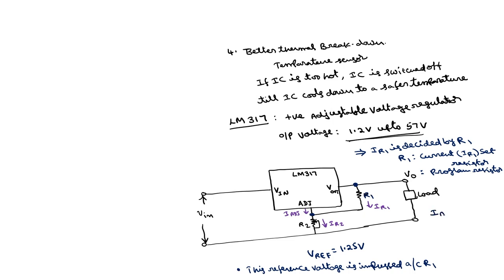I_adjust is very small — for the LM317 it is of the order of 100 microamps. Applying KCL at the node, I_adjust and I_R1 are entering and I_R2 is leaving, so I_R2 equals I_R1 plus I_adjust. V_naught is the voltage drop across R1 plus the voltage drop across R2: V_naught equals V_R1 plus V_R2.